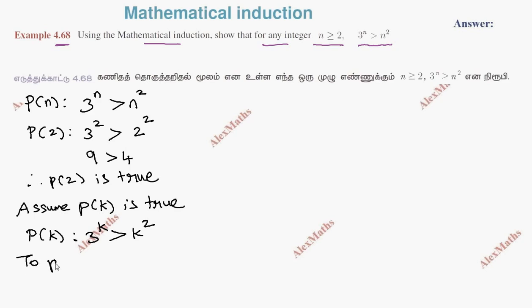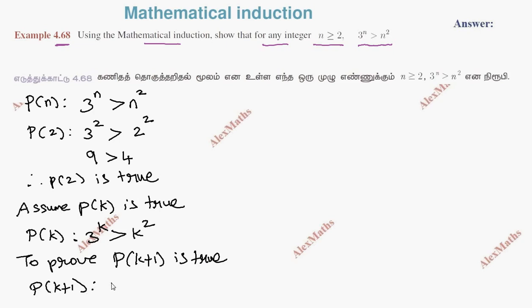We need to prove P of k plus 1 is true, that is, 3 to the power k plus 1 is greater than k plus 1 whole squared.